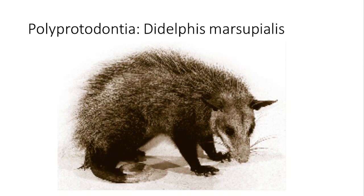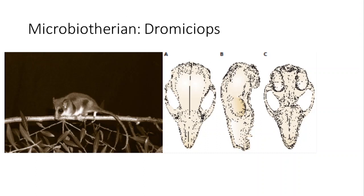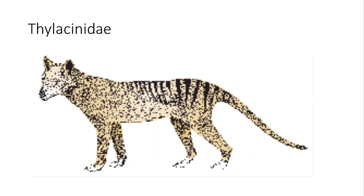We can also divide marsupials into two groups: the polyprotodontia, which have many front teeth, and the diprotodontia, which have two front teeth. One easy way to identify a marsupial skull is to count the number of incisors. Here's the caenolestid — a rat-opossum from South America — and here's a microbiotheriid, Dromiciops. Those are all South American marsupials.